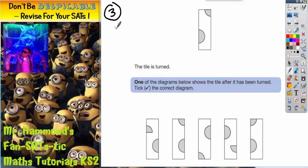Question 3 says here is a tile. The tile is turned. One of the diagrams below shows the tile after it has been turned. Tick the correct diagram. Now all these tiles look quite similar, but indeed only one of them is the same as this tile after it's been turned.